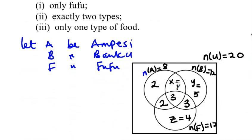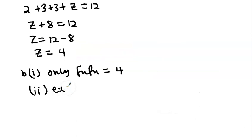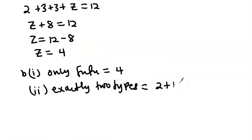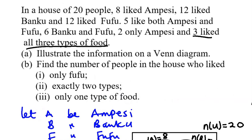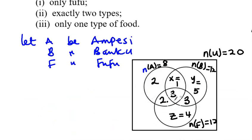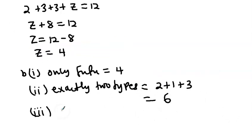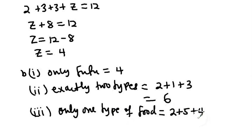For part (b)(ii), exactly two types: this includes the Ampesi & Banku only region (2), the Ampesi & Fufu only region (2), and the Banku & Fufu only region (3) — but not the centre. Wait, exactly two types gives us 2 + 1 + 3 = 6. For part (b)(iii), only one type of food: Ampesi only (1) + Banku only (5) + Fufu only (4) = 11.